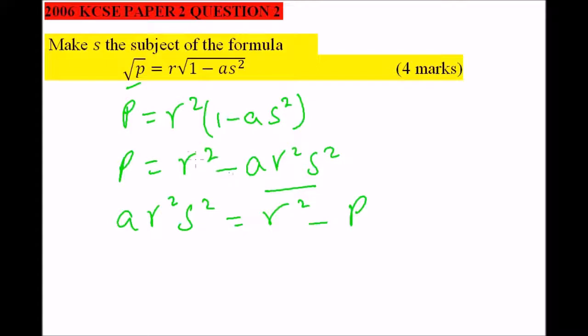P changes to negative once it crosses the cosine. So we now divide by ar squared. This cancels with that.